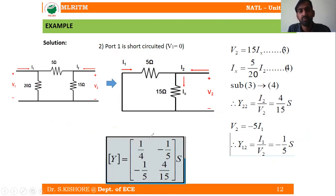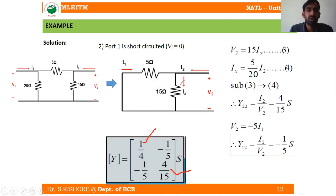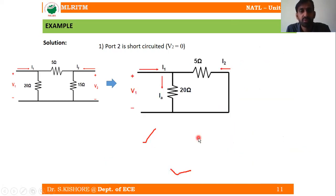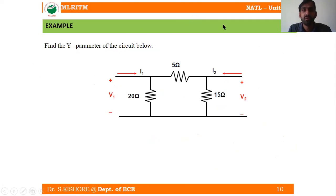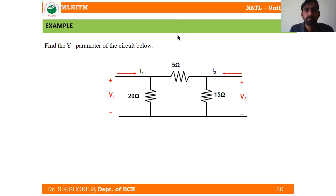This is the first methodology for obtaining Y-parameters by short-circuiting each port. There is also a second methodology — a simpler approach using KCL directly on the network.